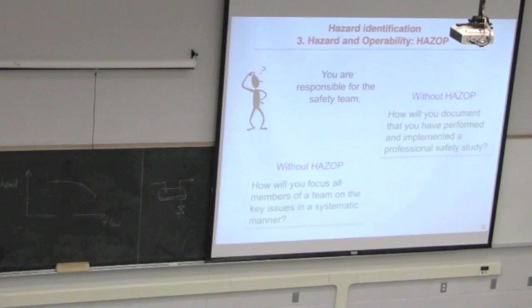If you want to be insured and if you want to have a reasonable measure of running your process without harming your neighbors and your employees, you need to document and prove that you've done the necessary work. It's not good enough to say here's my P&ID, I've done the safety. You need to document the procedure in a way that's accepted by other people.